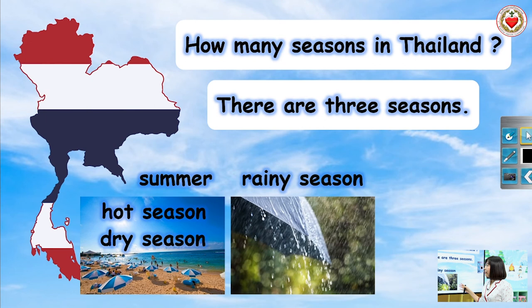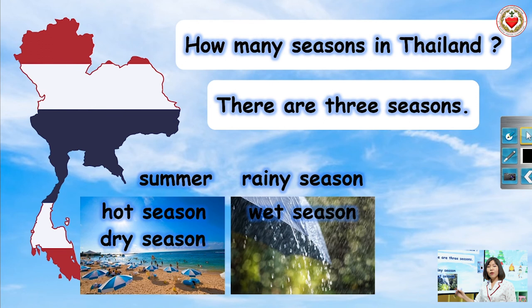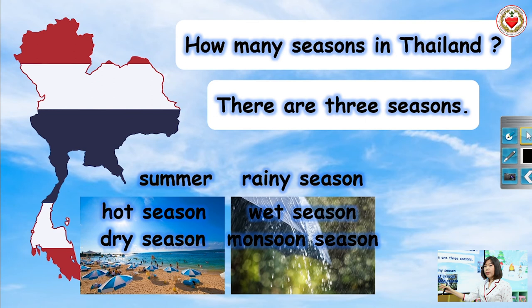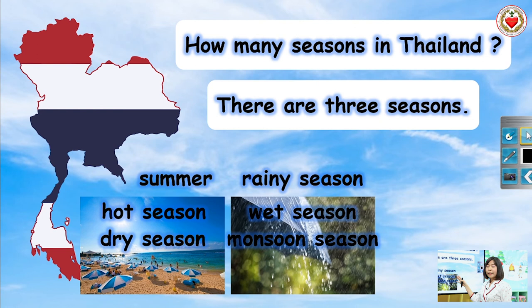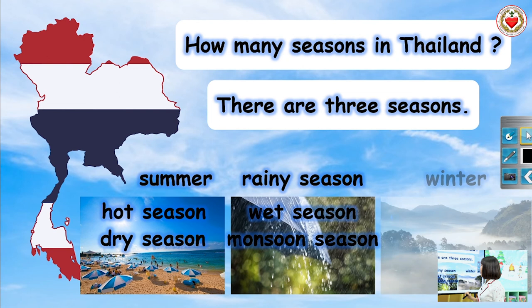Let's look at the second season in Thailand. Rainy season. Rainy season ก็คือฤดูฝนนะคะ นอกจาก Rainy season แล้ว ยังมีคำอื่นๆ อีก เช่น Wet season — Wet แปลว่าเปียก ก็สามารถพูดถึงฤดูฝนได้เหมือนกัน และ Monsoon season — มรสุมที่มีฝนตกมากนั่นเองค่ะ. Let's say again: Rainy season. Wet season. Monsoon season. Very well.